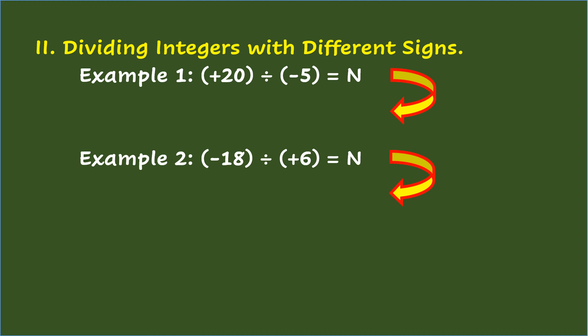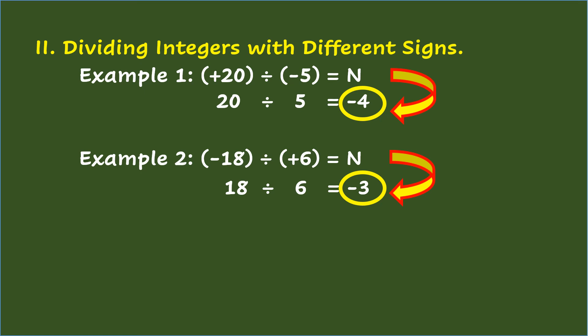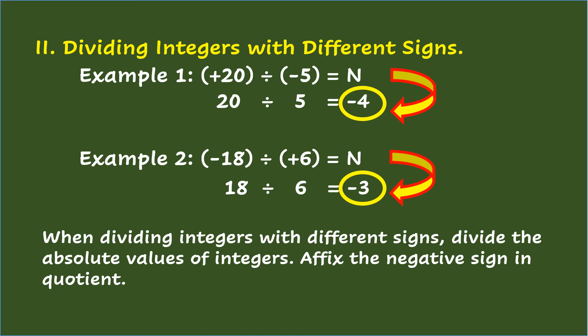Dividing integers with different signs. Example 1: Positive 20 divided by negative 5 equals n. Divide the absolute values: 20 divided by 5 equals 4. Then affix the negative sign in the quotient. So positive 20 divided by negative 5 equals negative 4. Example 2: Negative 18 divided by positive 6 equals n. Divide the absolute values: 18 divided by 6 is 3. Then affix the negative sign in the quotient. So negative 18 divided by positive 6 equals negative 3. When dividing integers with different signs, divide the absolute values and affix the negative sign in the quotient.